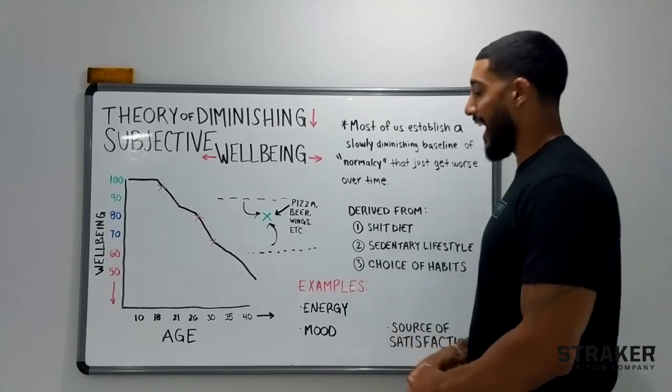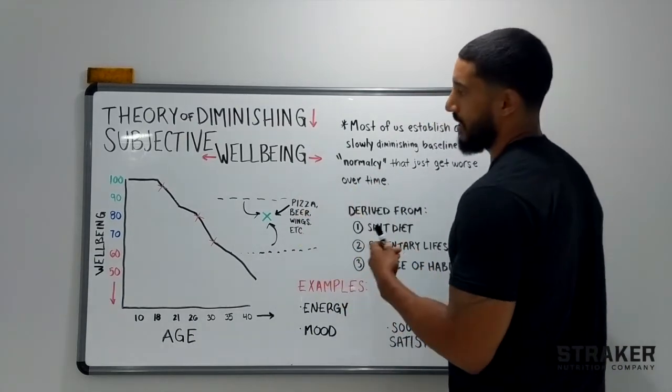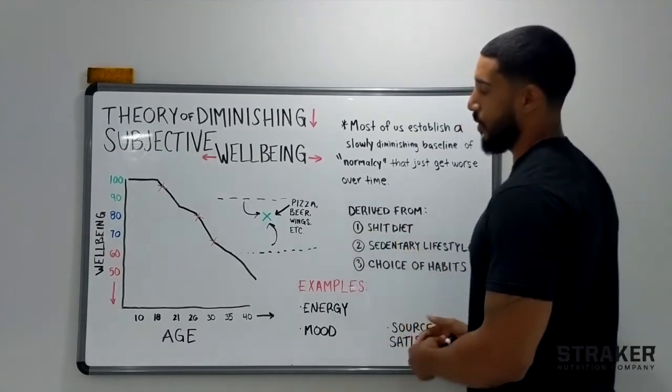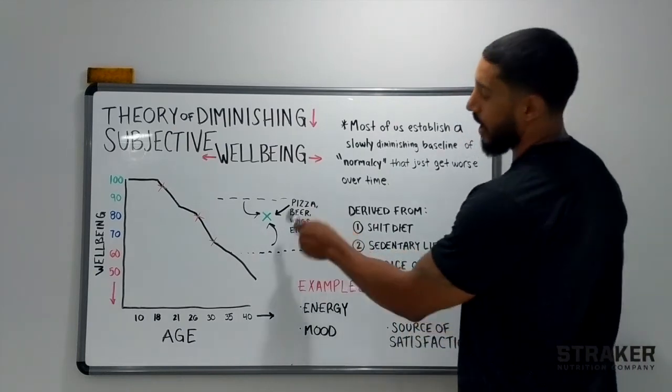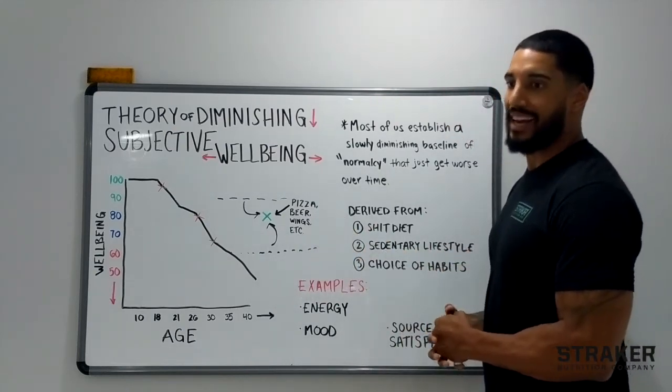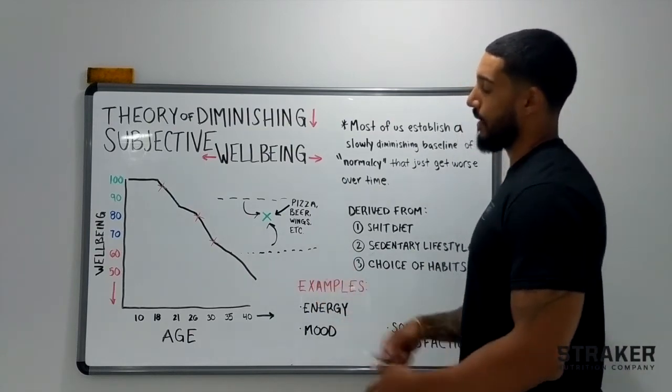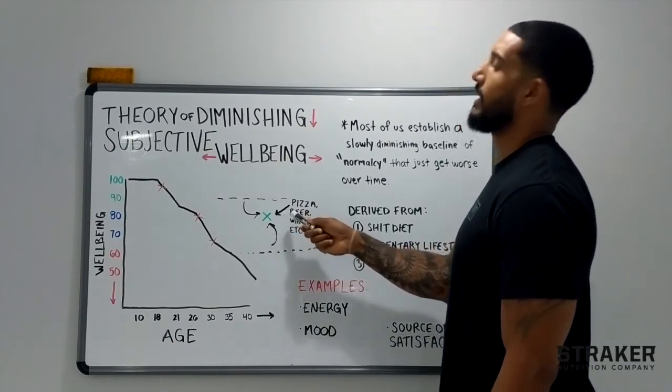So that is the argument that I make for the theory of diminishing subjective wellbeing. When your perception slowly diminishes over time, you latch onto not necessarily unhealthy things, but things that bring you a source of satisfaction and think that you can't do without them. The reason you think you can't do without them is because it temporarily increases your level of subjective wellbeing.